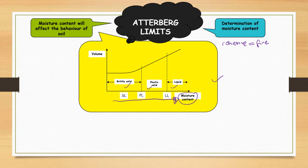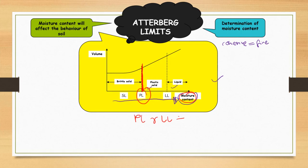The plastic limit is the limit between plastic and brittle solid — it is the boundary where the soil changes from brittle to plastic. Both plastic limit and liquid limit are determinations of moisture content. The plastic limit is the minimum amount of water content for the soil to behave as plastic.